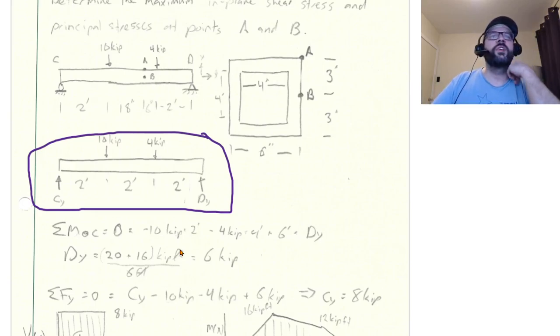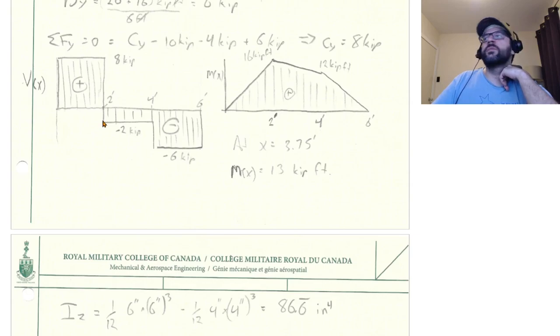Which gives us a shear diagram that looks like this. And from that, we can construct a moment diagram that looks like this. So maximum moments there is 16 kip feet, drops down to 12 kip feet at the four foot mark and then drops down to zero at six.